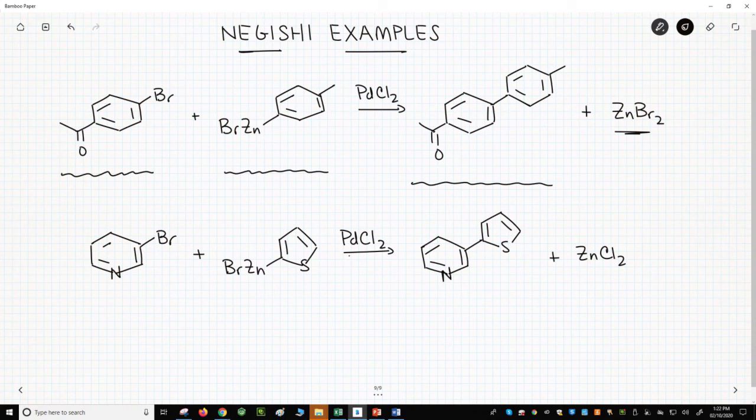This reaction highlights the importance of the organozinc. Organozinc reagents are reactive, but they are not as nucleophilic as Grignard reagents. Because organozinc reagents are less reactive, we can have some weakly electrophilic functional groups on the aryl halide. In this case, we have a ketone.